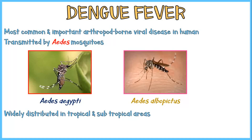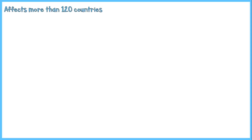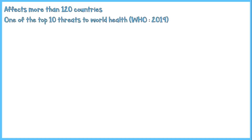These mosquitoes are widely distributed in tropical and subtropical areas, and most recently in more temperate areas as well. Dengue is a serious disease which affects more than 120 countries in the world. In 2019, it was named as one of the top 10 threats to human health by the World Health Organization.